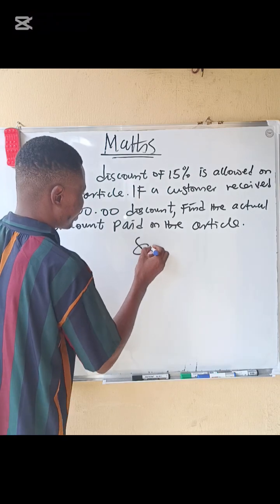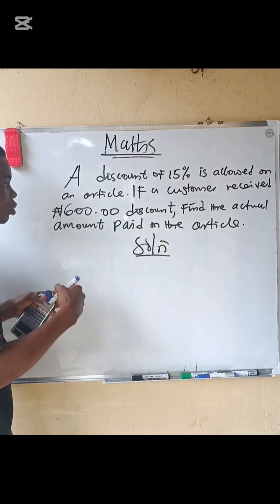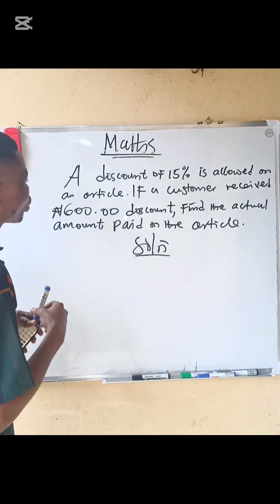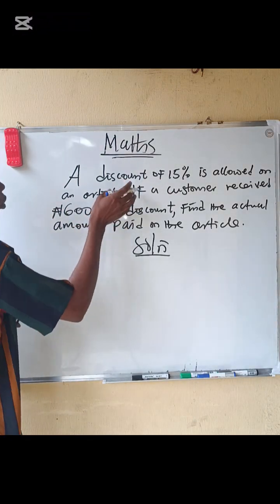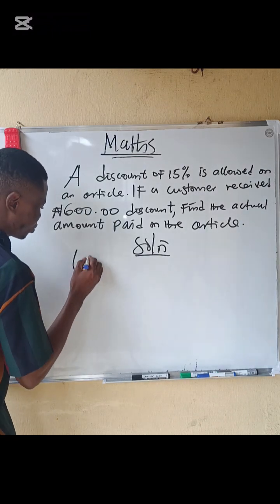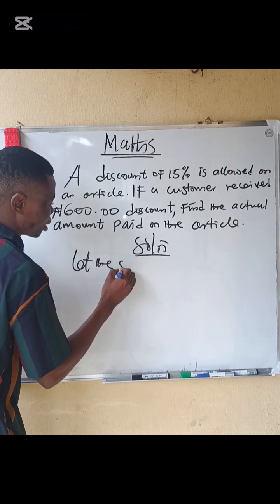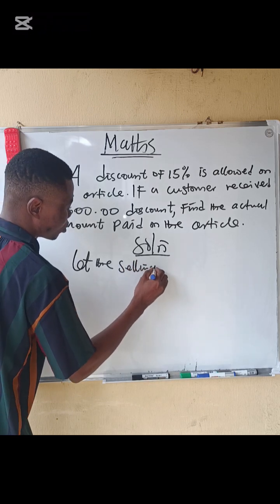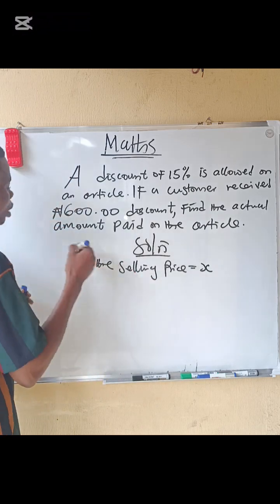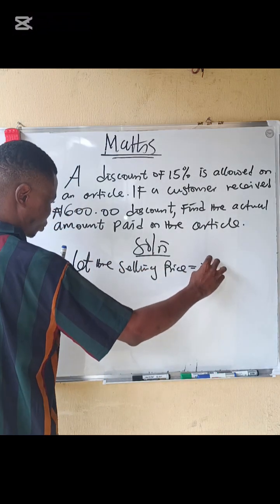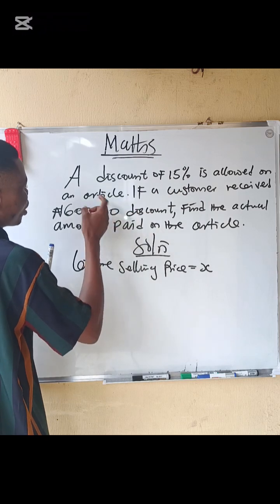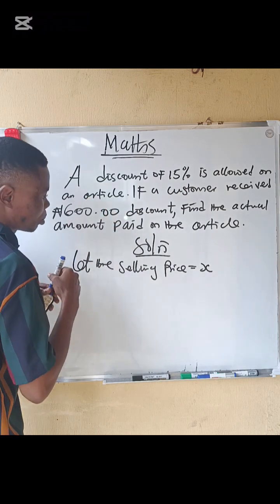Remember that the discount means a reduction in the original price. We don't even know the original selling price, so we let the selling price of that article be x. When you multiply x by this percentage and divide by 100, you get the discount amount.